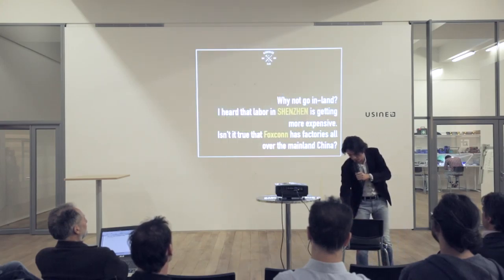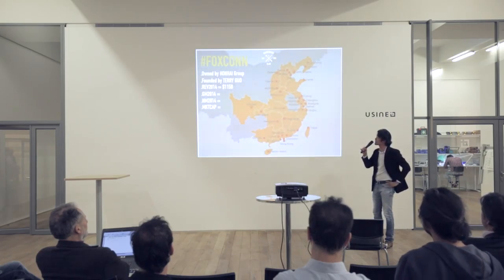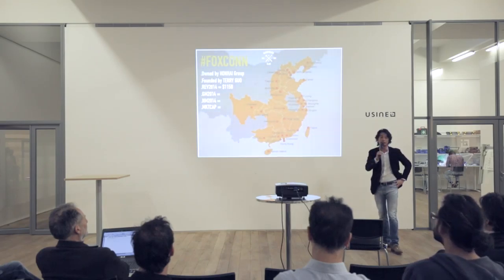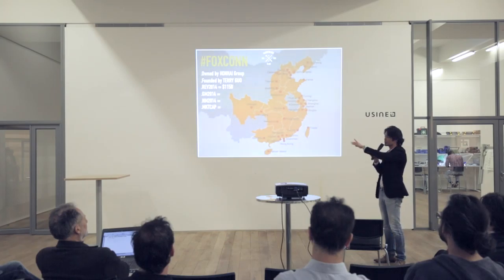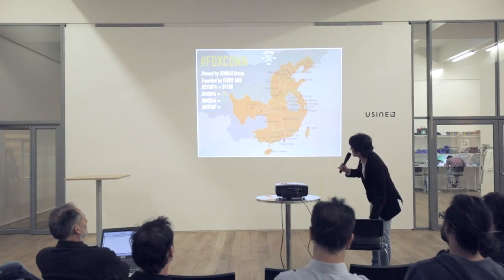Everyone talks about Foxconn. Foxconn is owned by the Hon Hai Group and was founded by Terry Gou, a Taiwanese. Their 2014 revenue was $115 billion US. What's the gross margin? Seven percent — and last year was considered a good year. The net profit margin on a good year is four percent of $115 billion. And their market cap? $45 billion. Compare that to Facebook's market cap of around $220 billion on $15 billion revenue.